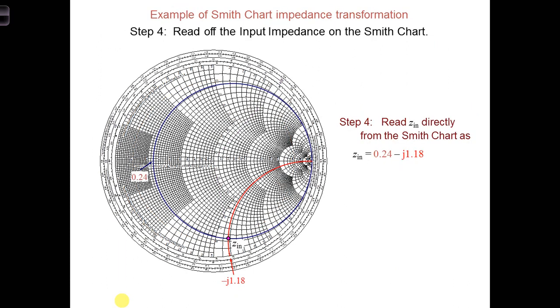Then for step four, we need to read off this new input impedance value from the Smith chart. So you can see what value it goes through, which R circle it goes through. And it's good enough to just eyeball it. So we get about 0.24 here. And which arc? So it's a negative arc because we're on the bottom half of the Smith chart, and it's about 1.18. So Z_in is given as this.